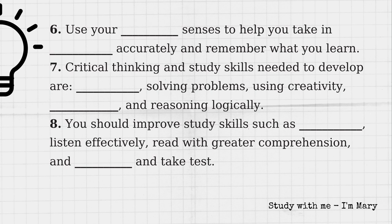The second key is to discover and use your learning style. This is another important key to your success. Use your five senses to help you take in information accurately and remember what you learn. Let your body's reactions tell you when you are most alert. Then try to plan your schedule accordingly. Know which learning environment you prefer, but be willing to adapt to others. Increase your level of motivation by developing an internal focus of control.